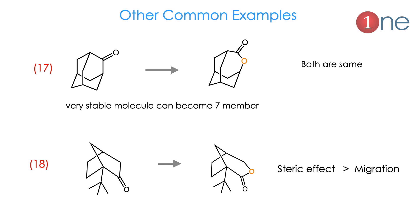Example 17: adamantane with a symmetrical carbonyl group — oxygen insertion can happen at any position without issue, and adamantane also undergoes seven-membered ring formation despite being a stable system. Example 18: steric effects again — a bridgehead carbon bearing a very bulky tertiary butyl group cannot mobilize easily. So oxygen insertion happens away from the bridge; steric effect is stronger than migratory aptitude here.